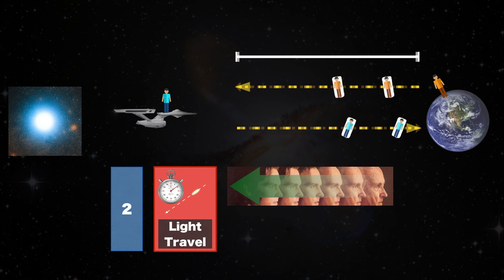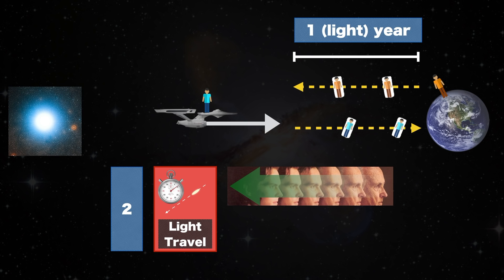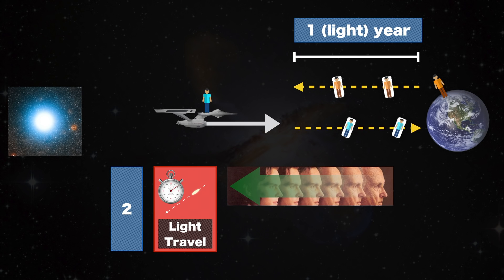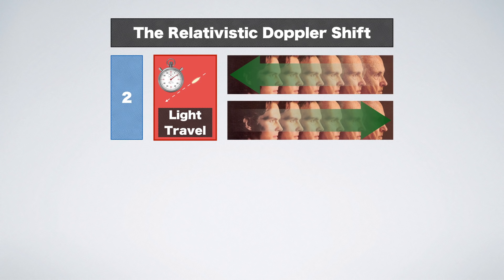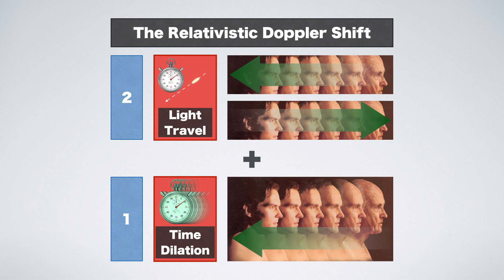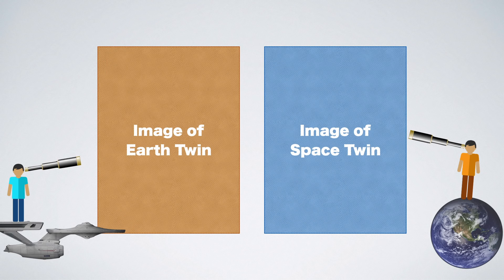After the turning point, this effect reverses. To make up for the shortening time light takes to travel between them, they will see each other age more quickly. This effect is called the relativistic Doppler shift, and it stacks with the effects of time dilation. Together, these two effects determine the image each twin will see of his sibling.